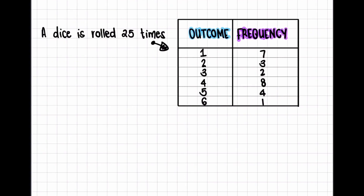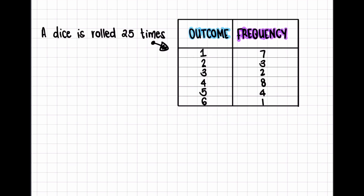Then we get to relative frequency. Relative frequency is after an event has happened or an experiment has been conducted. So a dice is rolled 25 times. Here we have the outcomes: one, two, three, four, five, or six — those are the different outcomes that we could have.